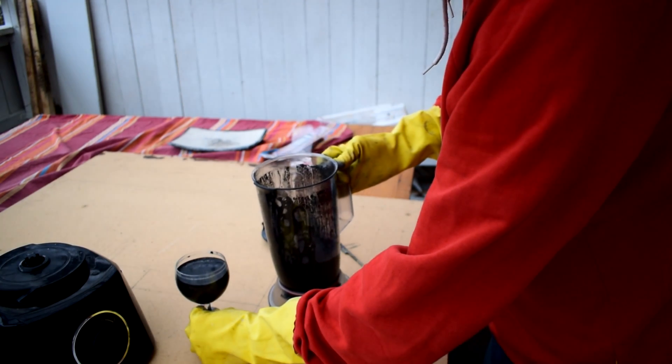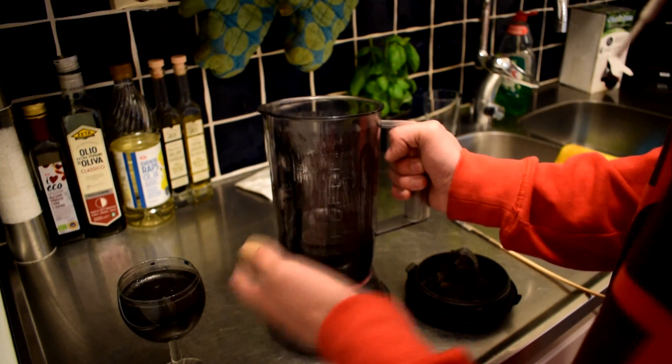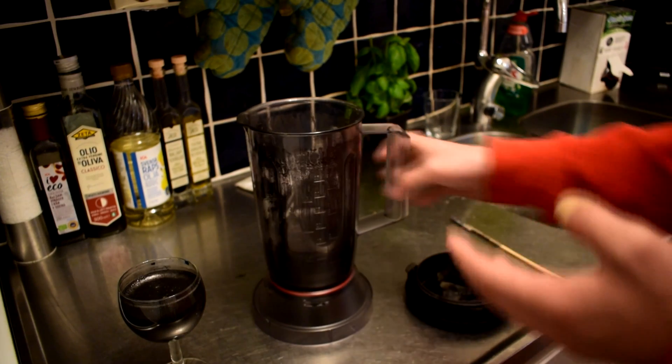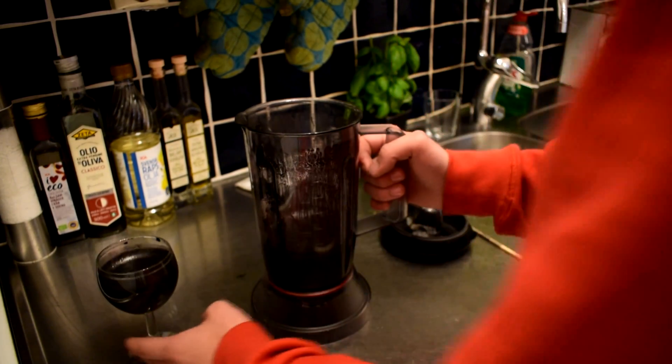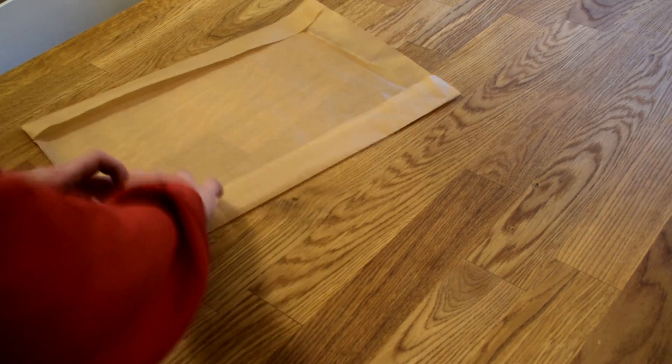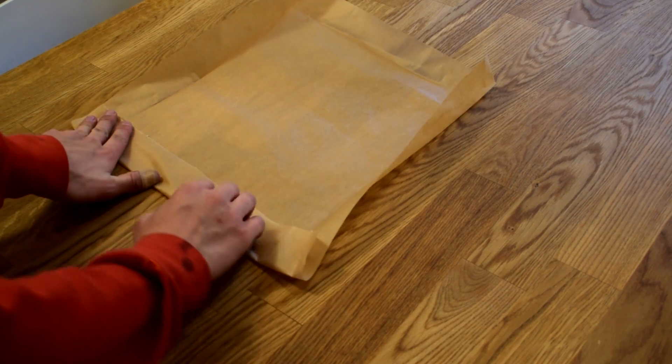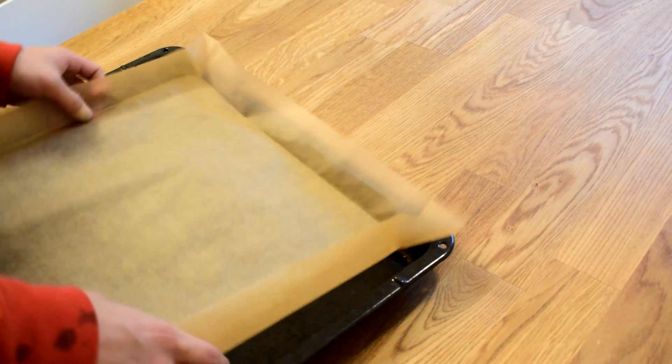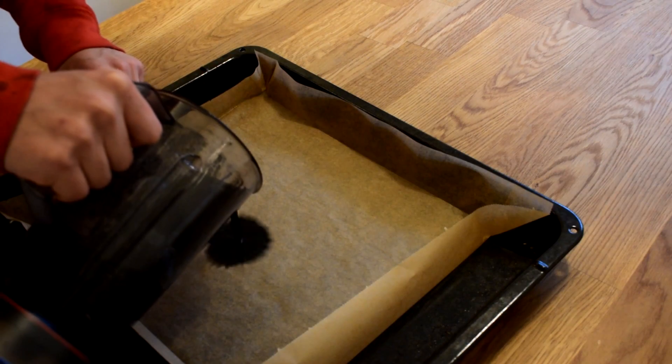Speaking of two methods, the second one is a lot faster. It takes about half an hour. The idea here is to boil off the liquid. Take a piece of baking paper and fold in the edges as shown. Place it on a baking sheet and pour the liquid into the paper.